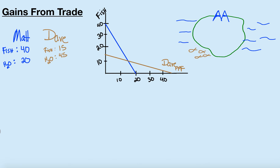Down here is water, and this one up here is Matt's PPF. So now we need to figure out: could these two be made better off if they trade and if they specialize where they have a comparative advantage? Let's take a look at comparative advantage and absolute advantage.